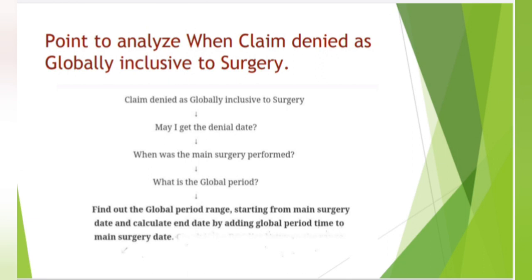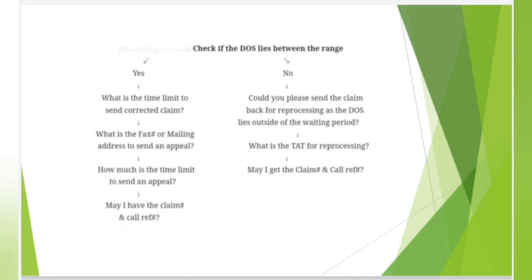Points to analyze when a claim is denied as globally inclusive to surgery: First, identify the claim denial date. Next, determine when the main surgery was performed and what the global period is. Find out the global period range starting from the main surgery date, and calculate the end date by adding the global period time to the main surgery date. Then check if the date of service lies within that range.